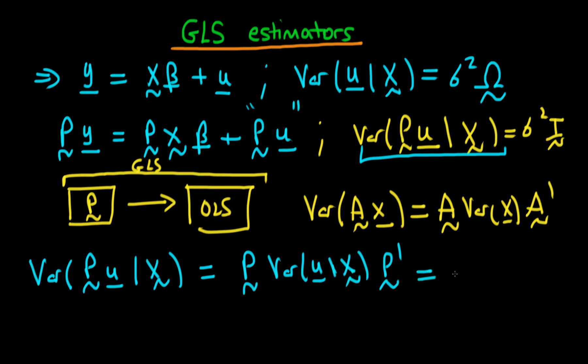So this is just going to be equal to, we can take the sigma squared outside, sigma squared times P times omega times P prime. And what we do is, or what we would like, is we would like this whole thing to be equal to sigma squared times the identity matrix I.